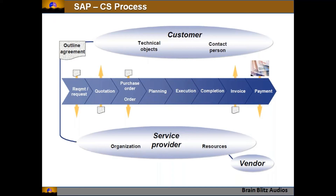The overall process works as follows: there will be a requirement or request — usually the customer raises a request when an issue is identified, such as a product not working. The service provider then provides a quotation if there is no agreed contract, or if extra materials not covered under warranty are needed. The customer then gives a confirmation, which may be a purchase order from the customer side to the service provider.